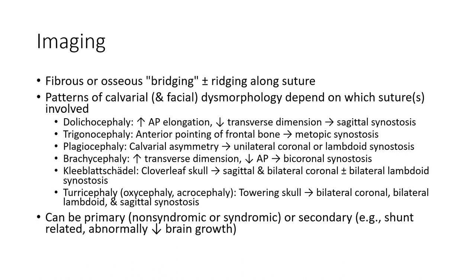Brachycephaly shows increased transverse diameter and decreased AP dimension, associated with bi-coronal synostosis. Cloverleaf skull is associated with sagittal and bilateral coronal plus or minus bilateral lambdoid synostosis. Turricephaly, or towering skull, involves bilateral coronal, bilateral lambdoid, and sagittal synostosis, and can be primary or secondary.